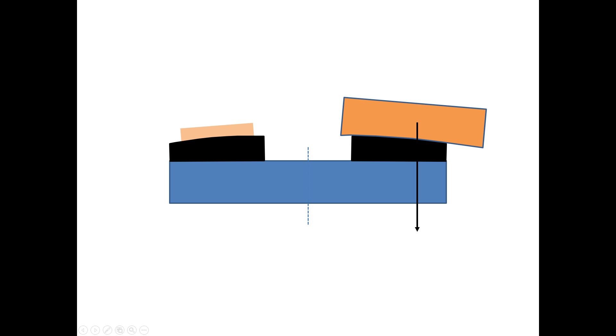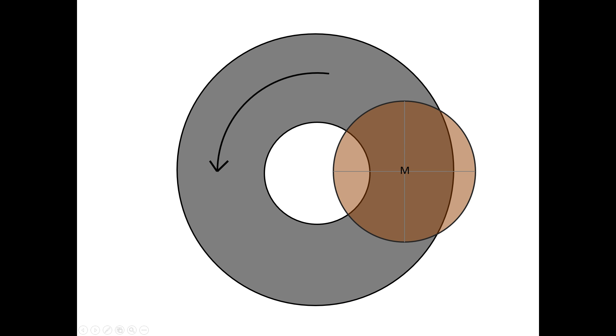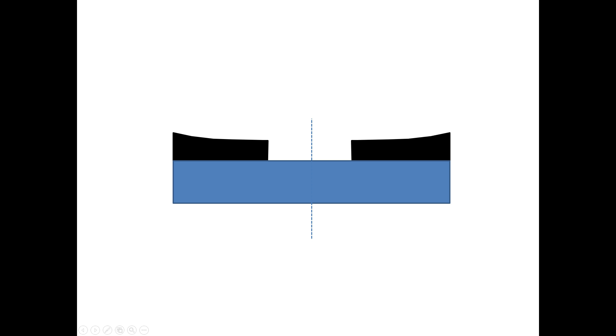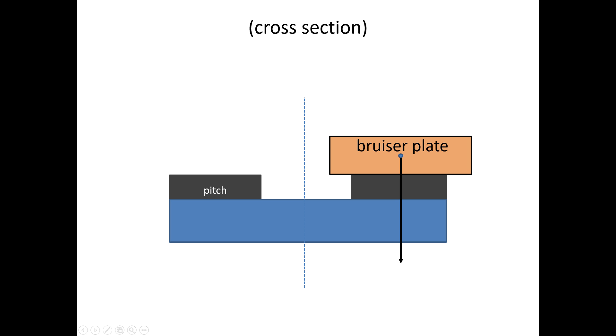In this image, the curvature of the pitch is of course heavily exaggerated for illustration purposes. Generally, we don't want the deviation from planar to be higher than a micron or so. In a similar way, if we place the bruiser plate more to the inside of the ring, the pitch will gradually become concave. In this way, we can control the surface shape of the pitch very accurately by varying the position of the plate in the vicinity of the equilibrium position.